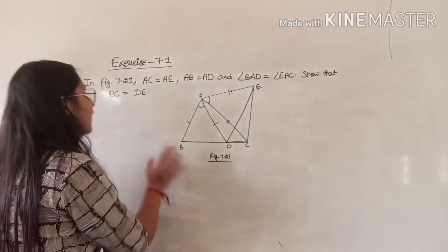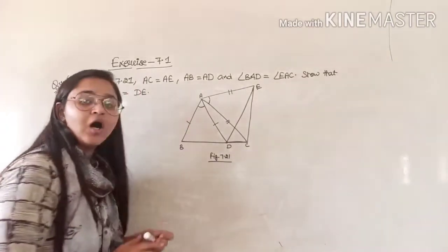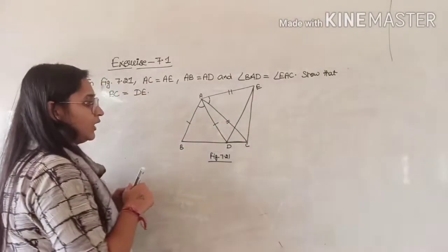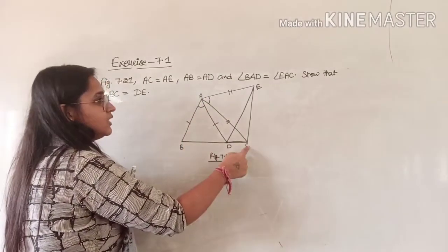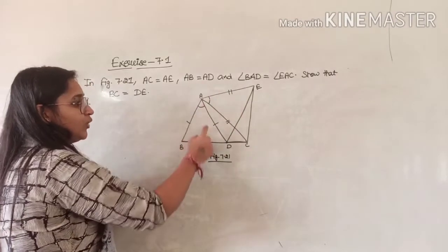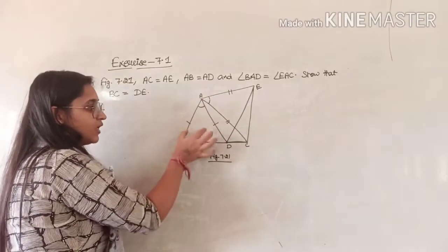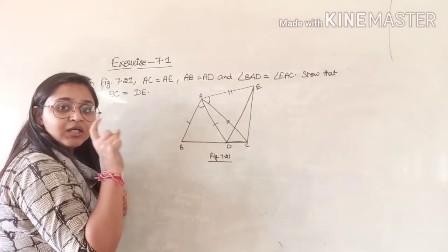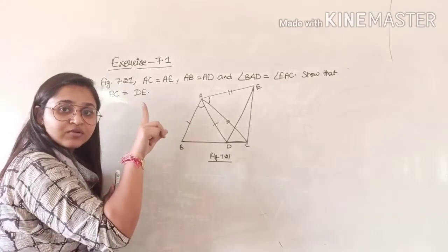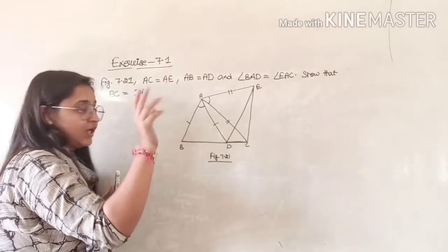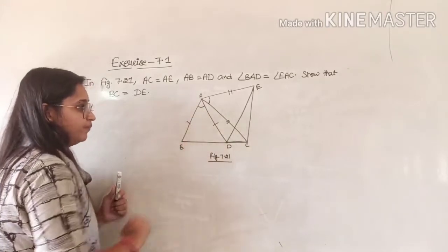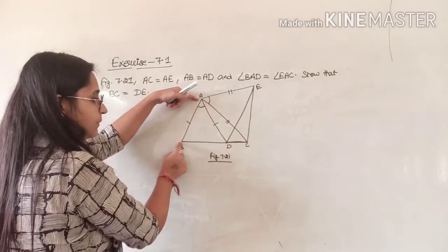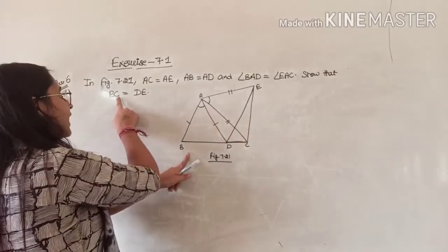The main important point is: if we have to prove BC is equal to DE, which triangles do I have to take? We know AC is equal to AE and AB is equal to AD. If I take triangle ABC, then BC is the side I have to prove. So let me consider triangle ABC.